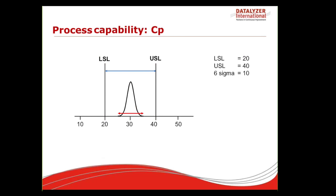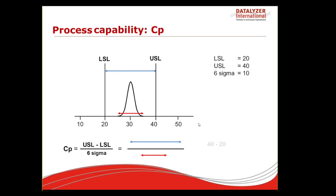The CP is the capability index. To calculate it, we take the allowed tolerance from the customer — in this case USL is 40 and LSL is 20, so the allowed tolerance is USL minus LSL = 20 — and we divide it by 6 sigma. In this example, 6 sigma equals 10, so the CP value is the allowed tolerance divided by the process variation: (40 − 20) / 10 = 2.